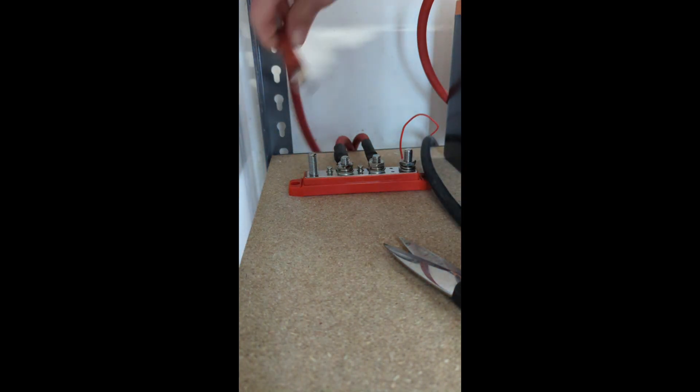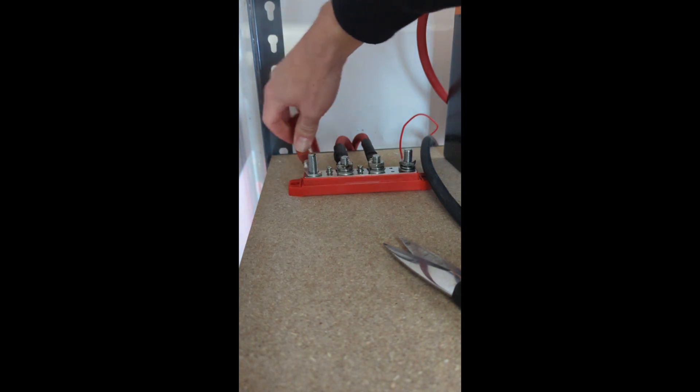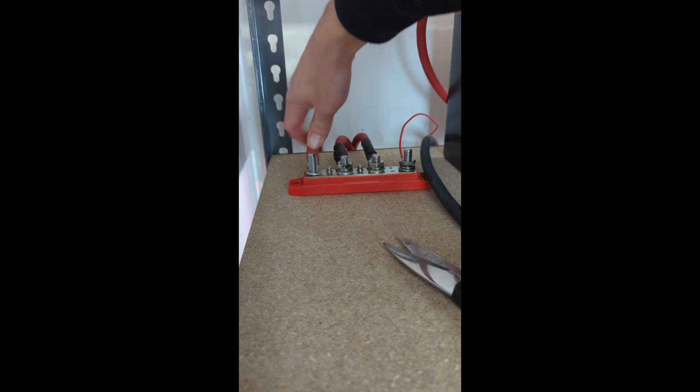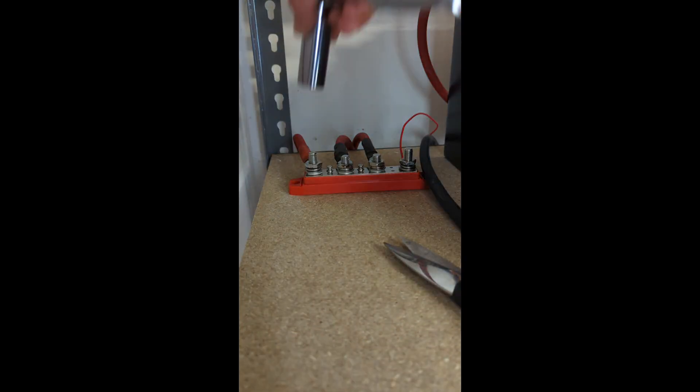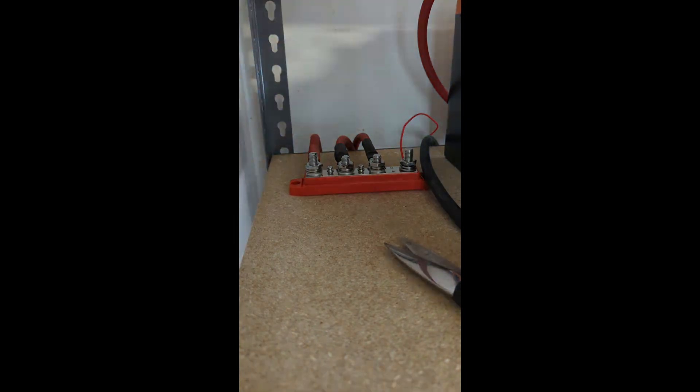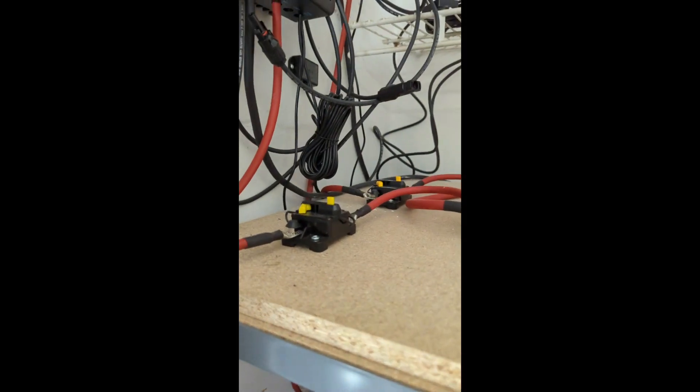We're going to get a little bit of spark on this one. This is going from the main charge controller and inverter. You can avoid that spark if you use a pre-charge resistor. It will spark like that when the capacitors are energizing in the solar charge controller. All of our connections are now tight and we can turn everything back on.